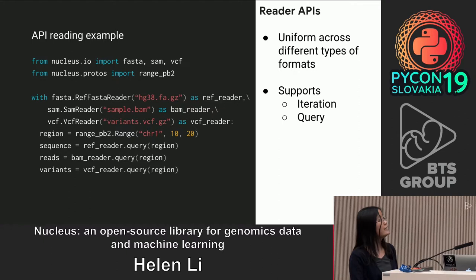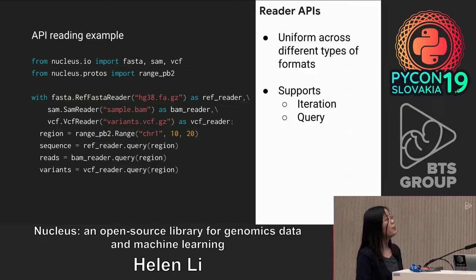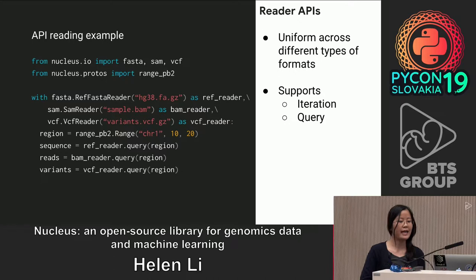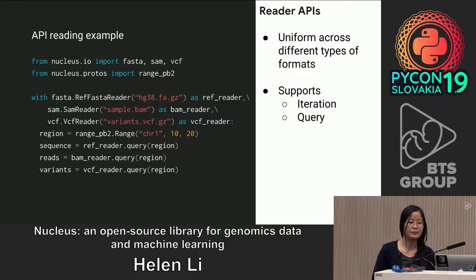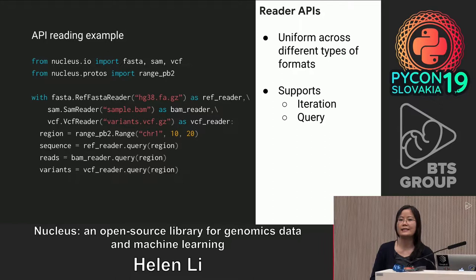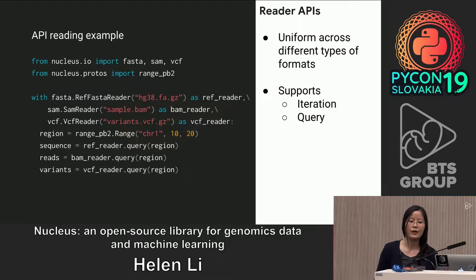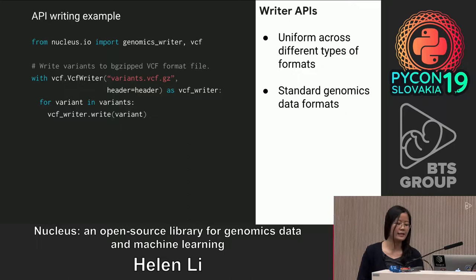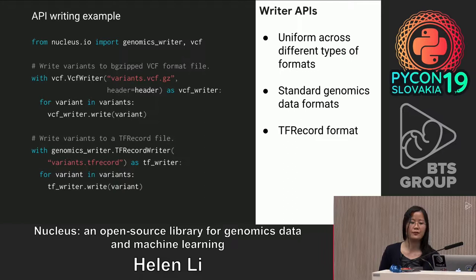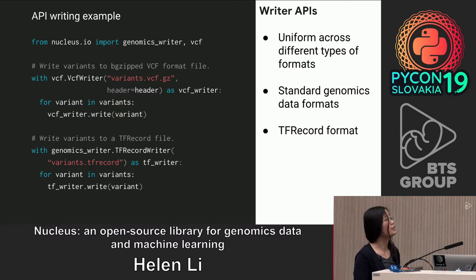This code snippet shows you how you can use Nucleus to read three different data formats. Here you can see the reference reads, the mapped reads, and the VCF variants data. The reader APIs provide uniform access across different types of genomics data formats, and this API supports iteration and query. So you can say things like: fetch me all the reads from a certain region of the genome, look up the reference, and also see if the reads overlap with any variants. For the writer API, we support standard genomics data formats as well as TF records, which are the TensorFlow-specific formats.